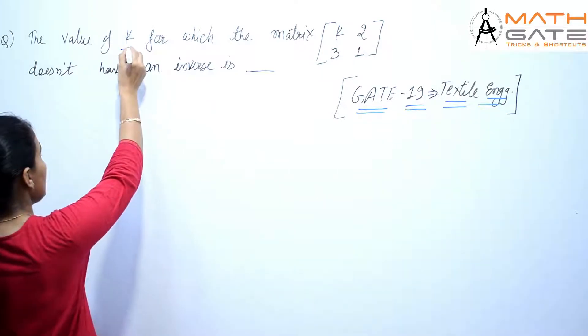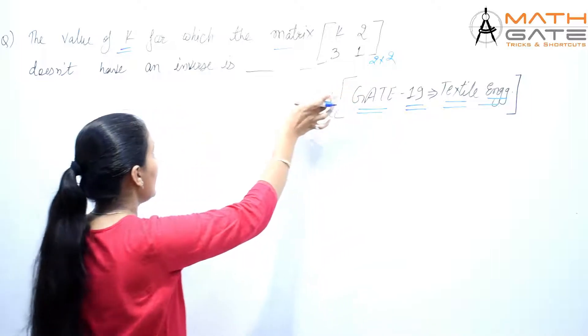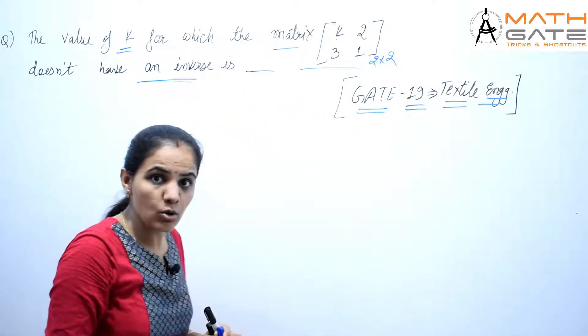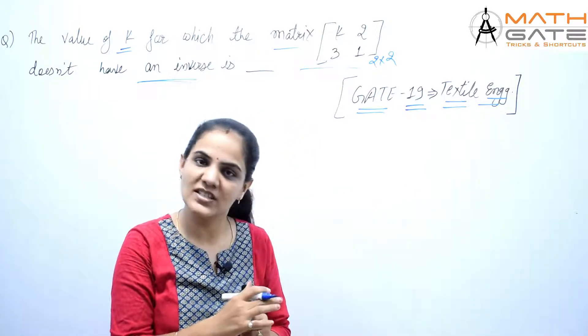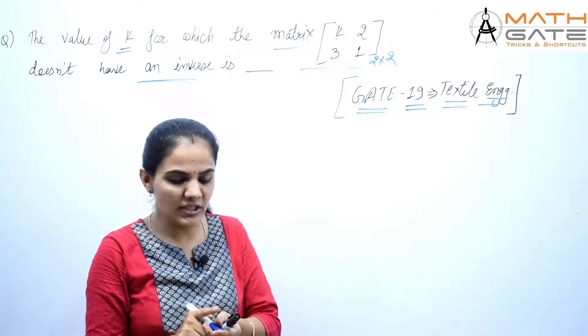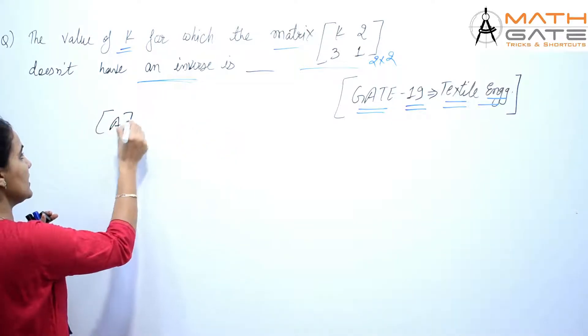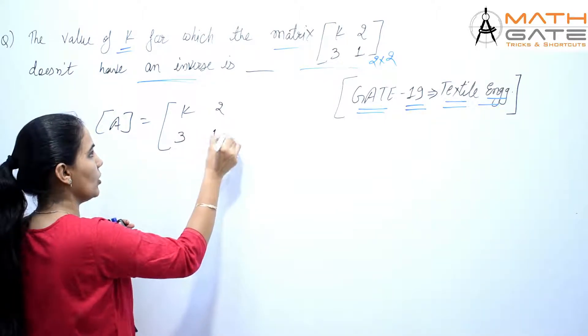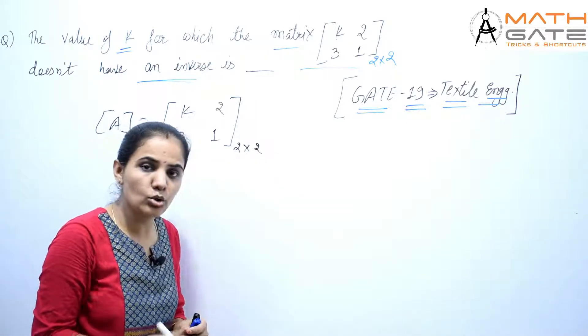The question is: the value of k for which the matrix [k 2; 3 1], a 2×2 matrix, does not have an inverse. For what value of k does this matrix's inverse not exist?